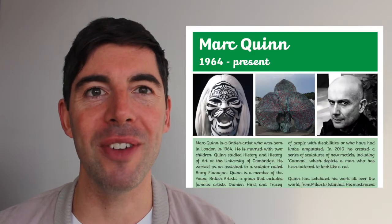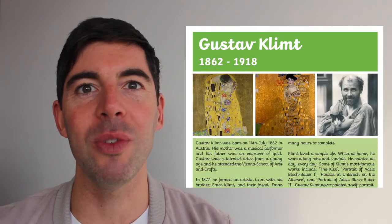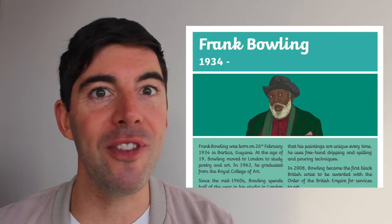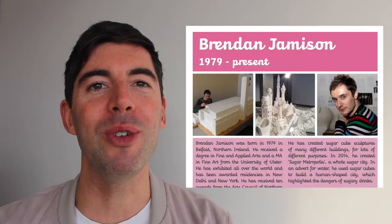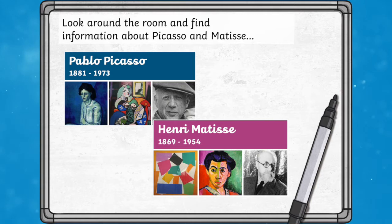We have a whole selection of artist fact sheets which can be used in English lessons as well as art lessons. You could try a find the fact activity where you chop sentences, phrases and paragraphs up, place them around the learning space and children must match these to the correct artist, perhaps presented on the board with examples of their artwork as shown in our fact sheets.